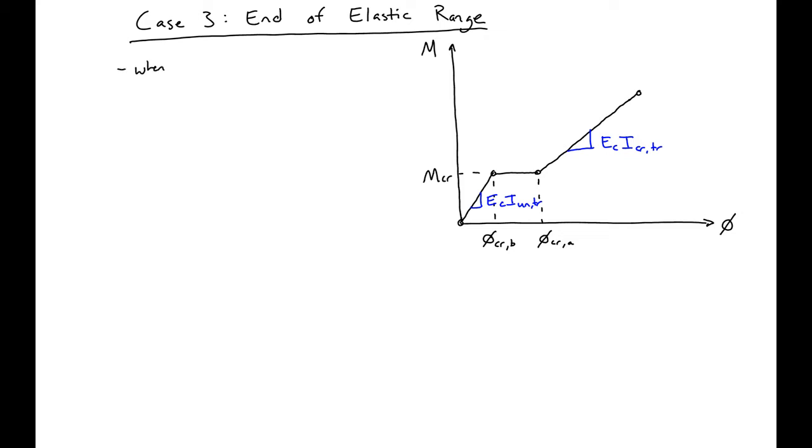The first point we can say is when our steel yields. When our steel yields, we know that our yield stress will be equal to our modulus times our strain, which will be equal to our yield curvature times (d minus kd) times our modulus.